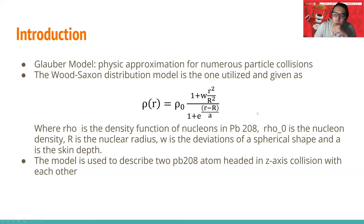First I want to make some brief introduction. What is the Glauber model? The Glauber model is a physics approximation for numerous particle collisions. In the paper we're using the Wood-Saxon distribution model and it is given by this formula. You can understand this formula as it describes the density at a certain place in the atom at a certain radius, which means how much density at a certain radius.